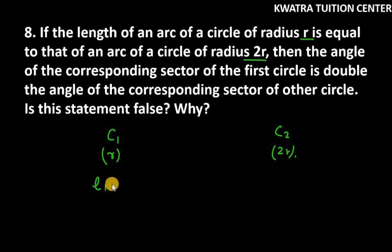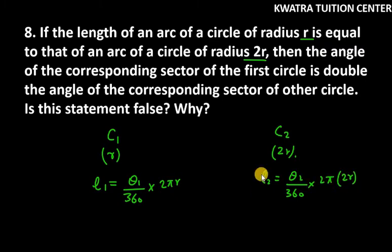So this means that l1 is theta 1 over 360 into 2πr, and we can write r only. And the other circle l2 is theta 2 over 360 into 2π times 2r.